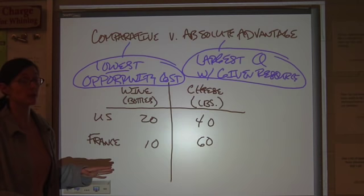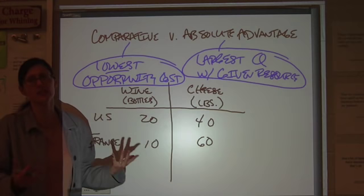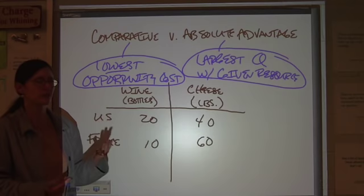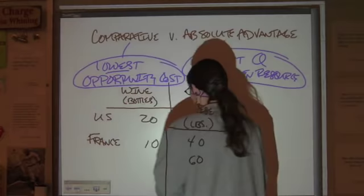Now, the problem that we were dealing with in class the other day is looking at wine and cheese production. It says in the problem with a given amount of resource, we can look at this in terms of, say, land use, for example. Given amount of land, what can you do with it? Or given amount of labor. There are different things we can throw in here. But just know that you're limiting resources in both countries to the same degree so that they're kind of on the same terms.